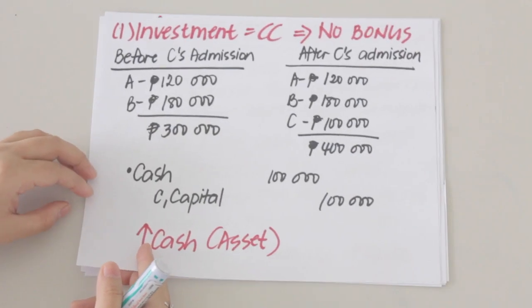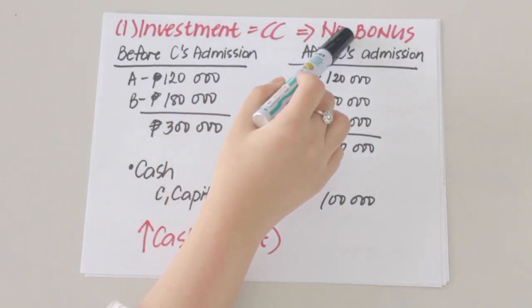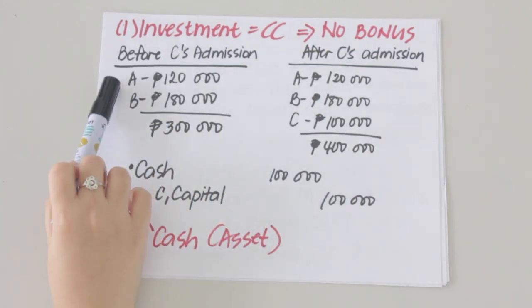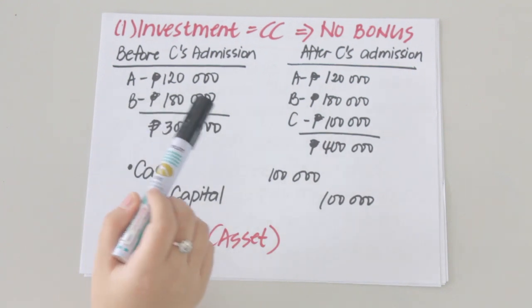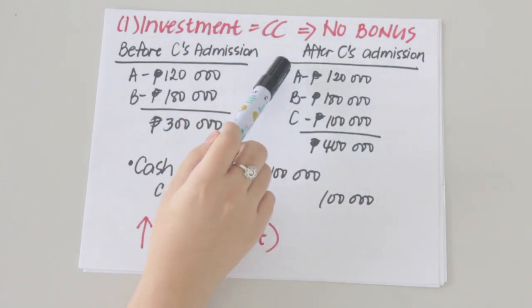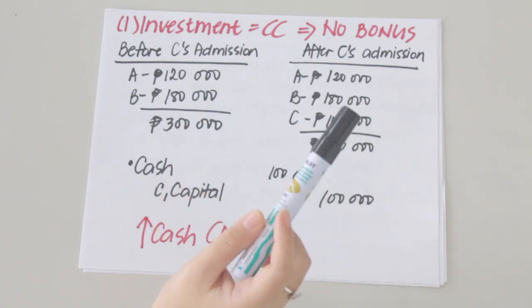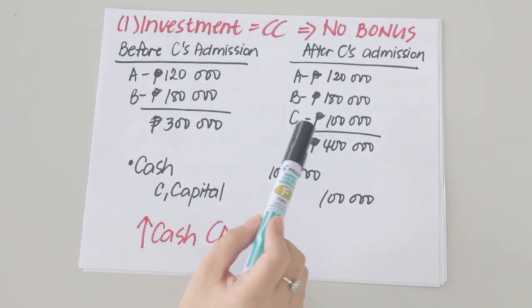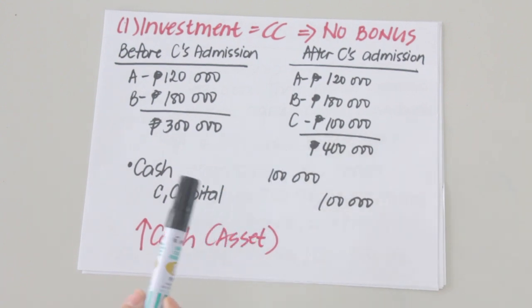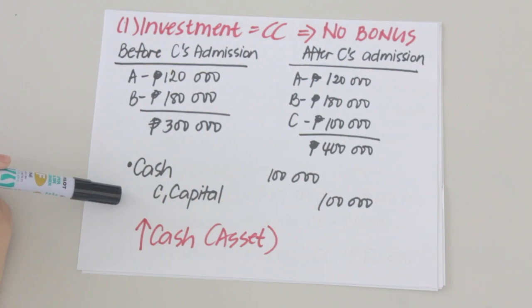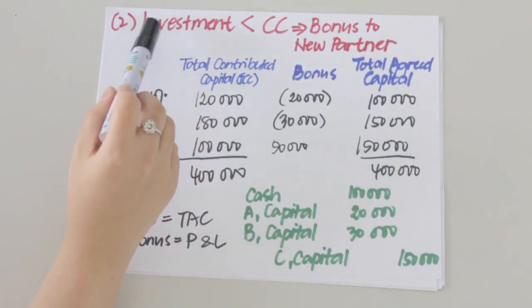In the first scenario, C's investment equals the capital credit — no bonus is provided. Before C's admission, A has a capital of 120,000 and B has 180,000 for a total of 300,000. After C's admission, A and B's capital balances are unchanged, and C has a capital credit of 100,000 equal to his investment, bringing total capital to 400,000 pesos. To record C's admission, we debit cash for 100,000 and credit C capital for 100,000.